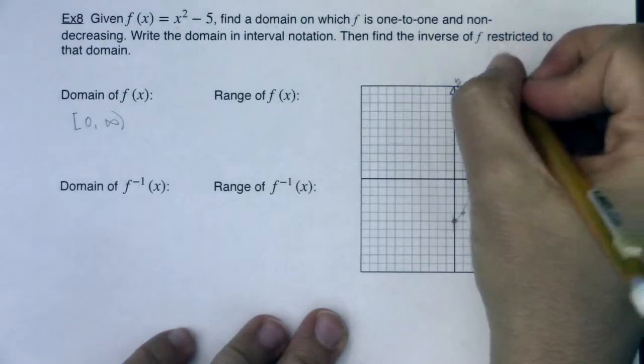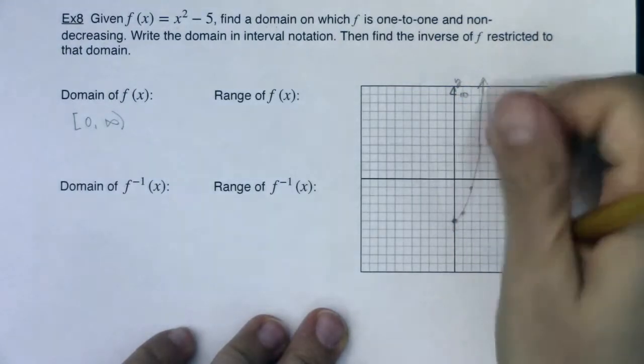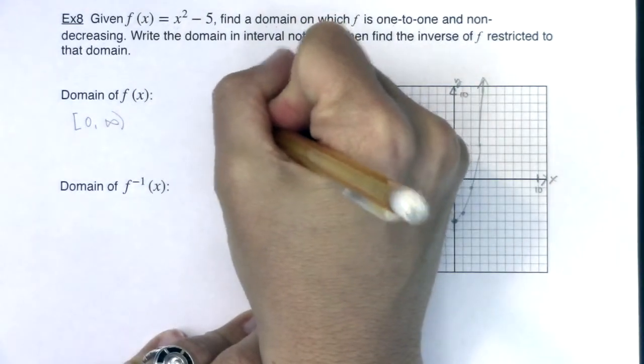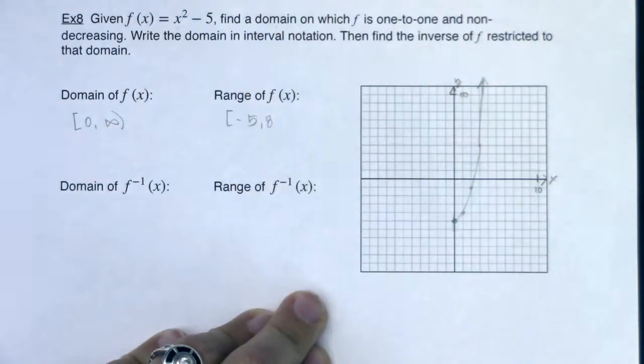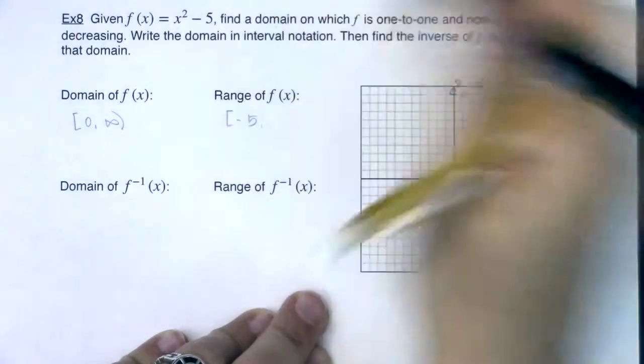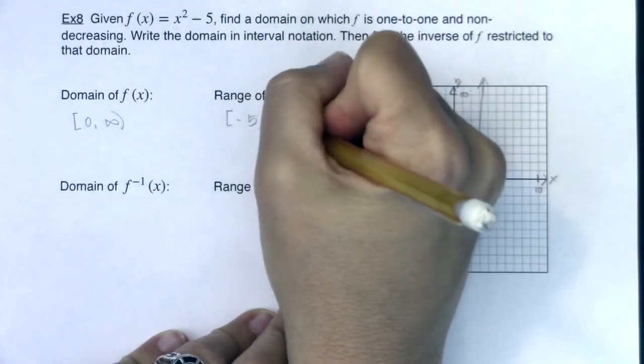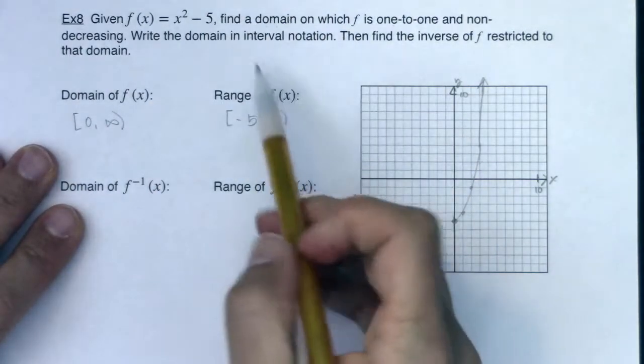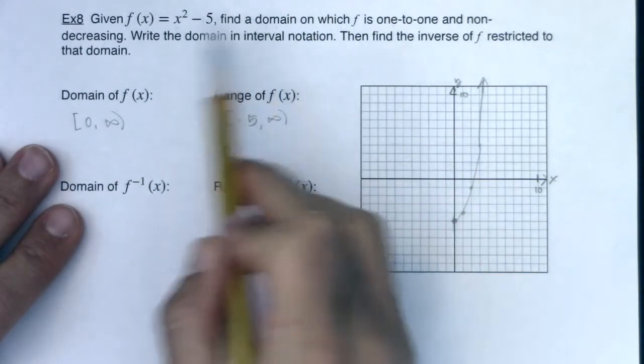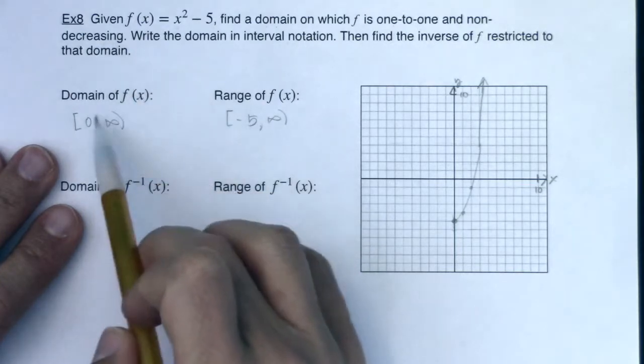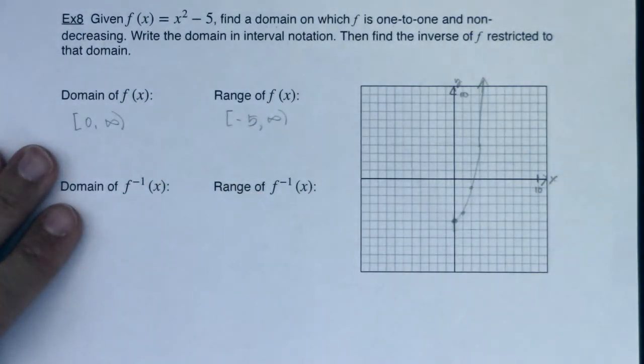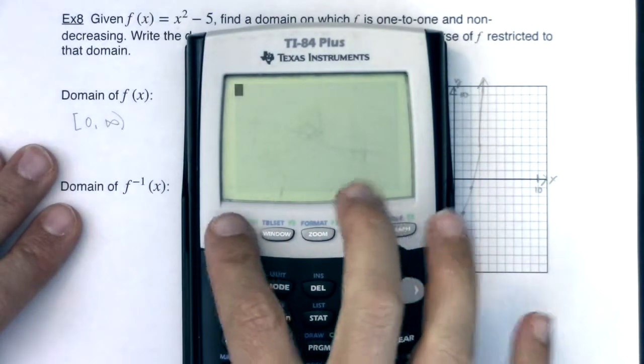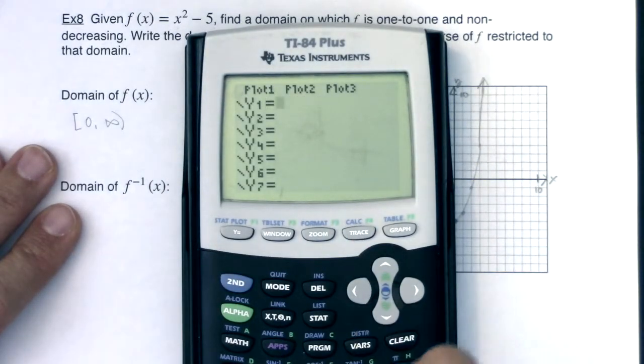What's the range of this function? This is going from a y value of negative 5, and we go up forever. So I'm at [-5, ∞). So I've, at this point, just answered the first question. I have found a domain where this function is one-to-one and non-decreasing. I took a piece of that function. If you want to write this up, if you actually want to see that piece, let me just show you what we have here.